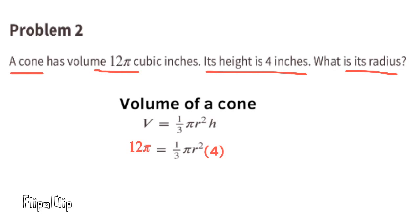We can substitute h with 4 and v with 12 times pi. We are solving for r, so we need to get r by itself on the right hand side of the equal sign. Let's multiply both sides by the reciprocal of 1/3, which is 3. 12 times 3 times pi is 36 times pi.